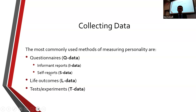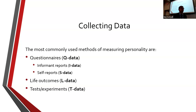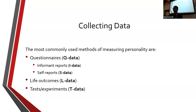Most often this is going to be self-reports, or S data. Like the tests we talked about, the Big Five is usually a self-report. The main advantage is that we're getting an overall big picture of the person's personality. We can ask about them in various contexts, and only the individual is probably fully aware of their own thoughts, feelings, behaviors, and the full range of contexts they experience.